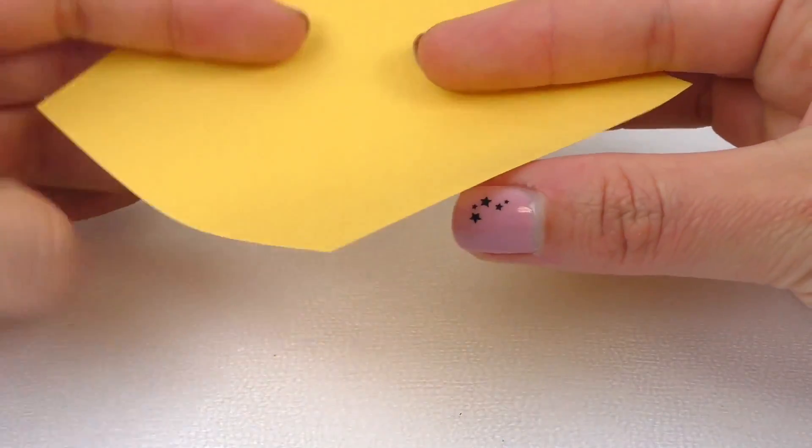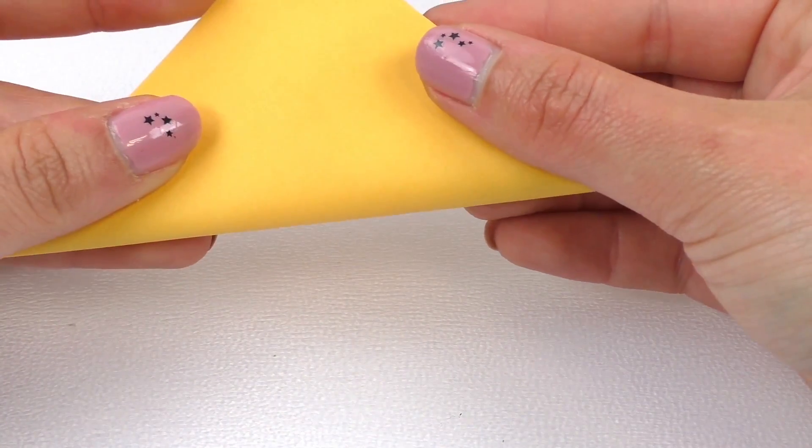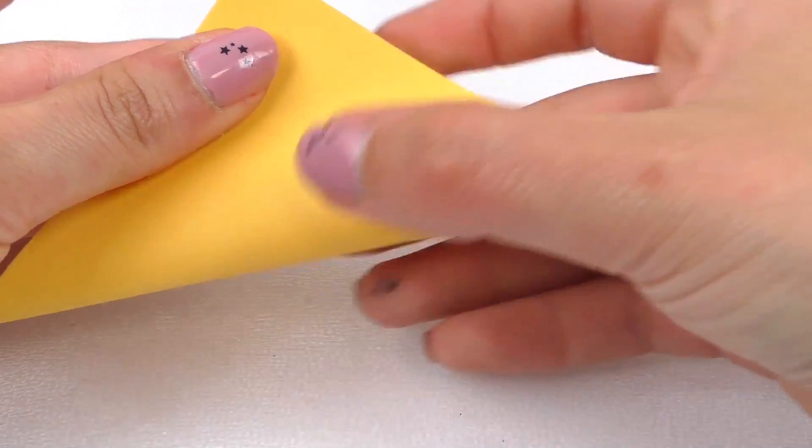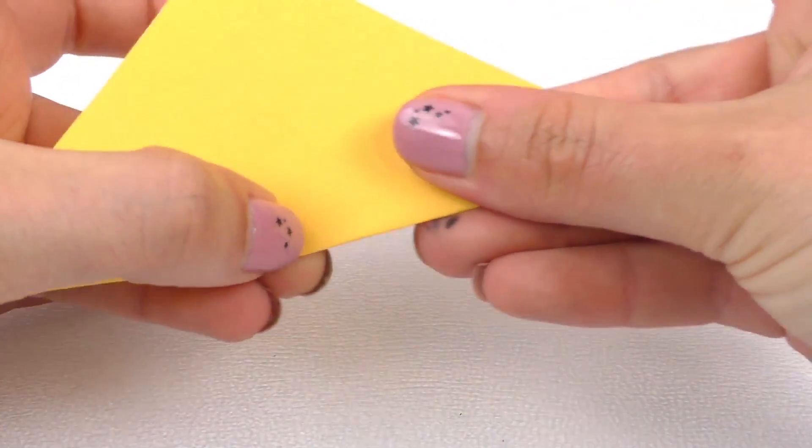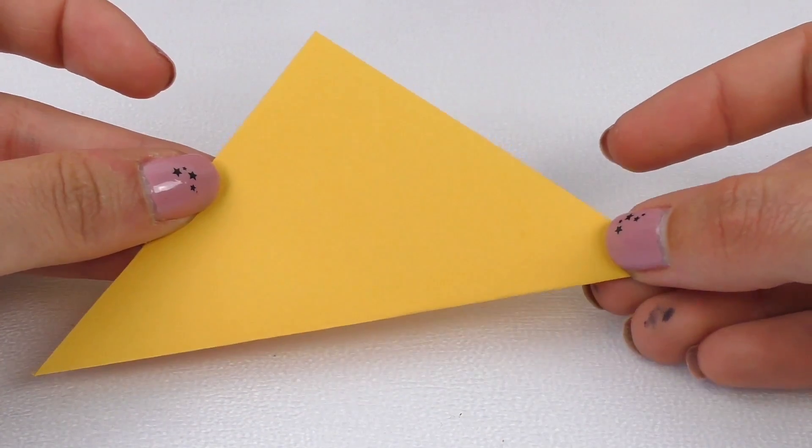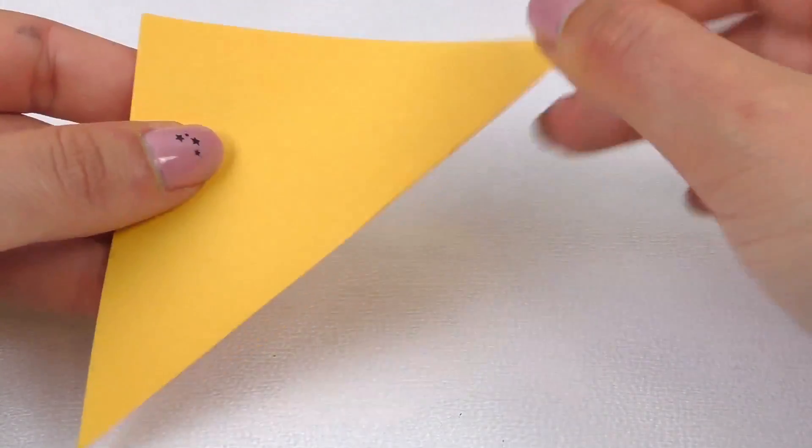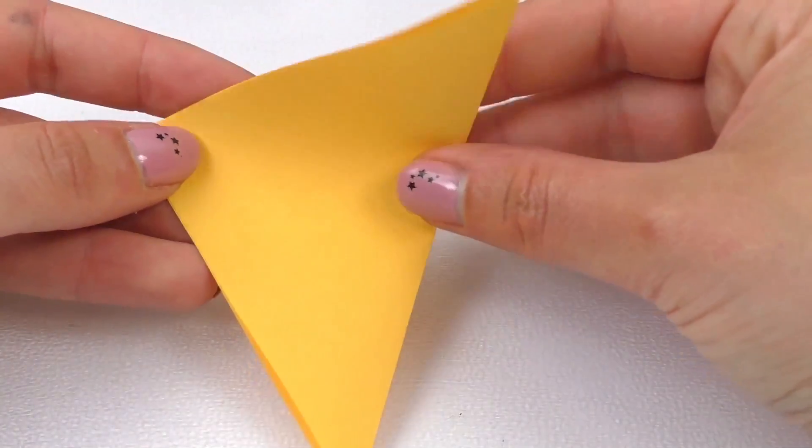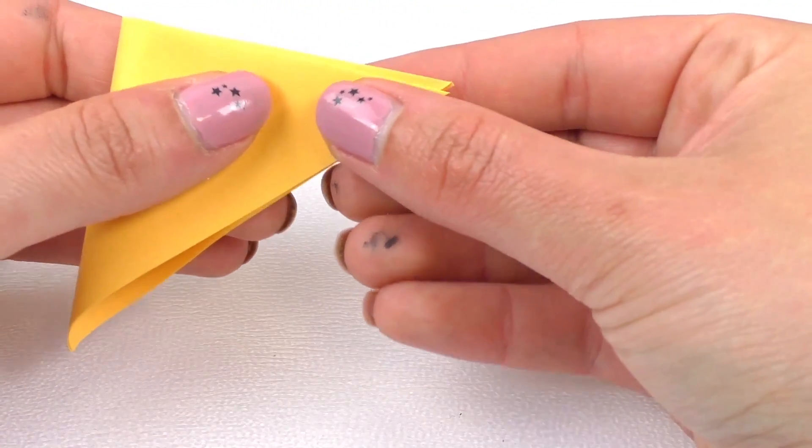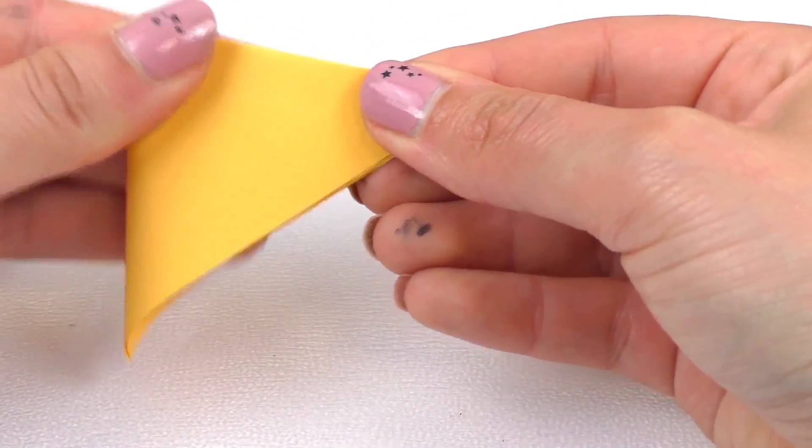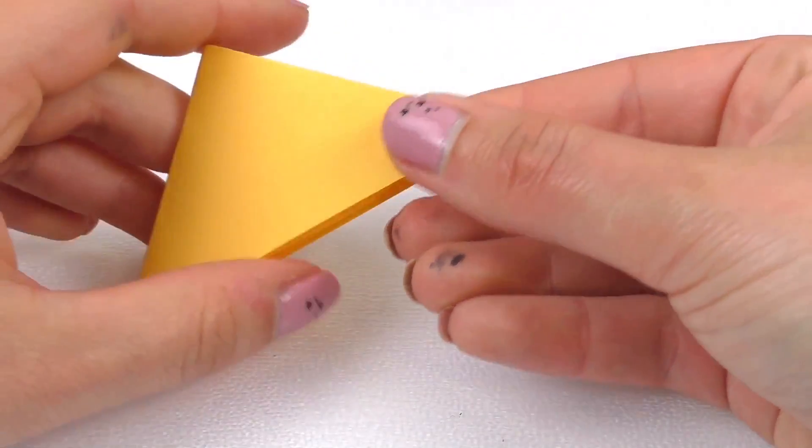We're going to start by folding our square in half, bringing opposite ends to touch. Then we have a smaller triangle. We're going to fold it again from these two corners, just like this, and we end up with a smaller triangle.